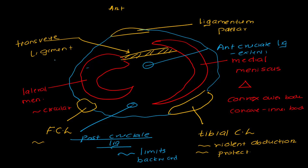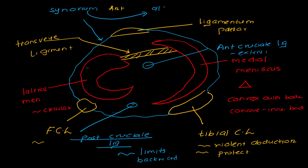Interior to the capsule there is the synovium — a living structure that requires nourishment and is involved in the production of synovial fluid. The synovium has folds projecting into the knee joint, known as alar folds. These alar folds are covered by means of infrapatellar fat pads — not clinically very important, but mentioned here for completeness of the anatomy.